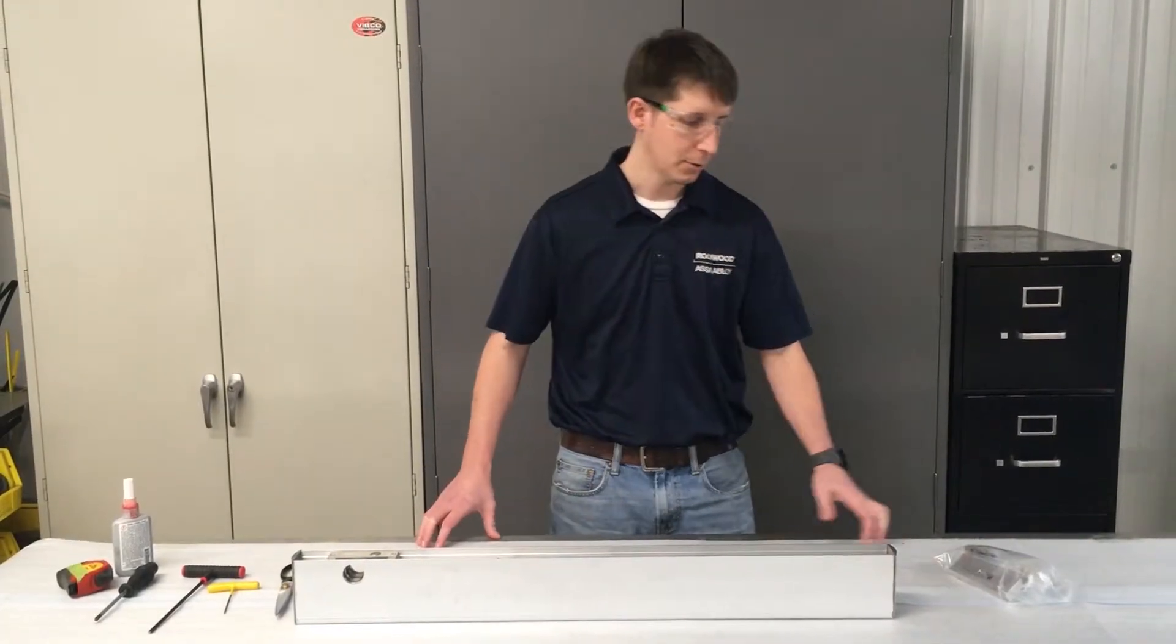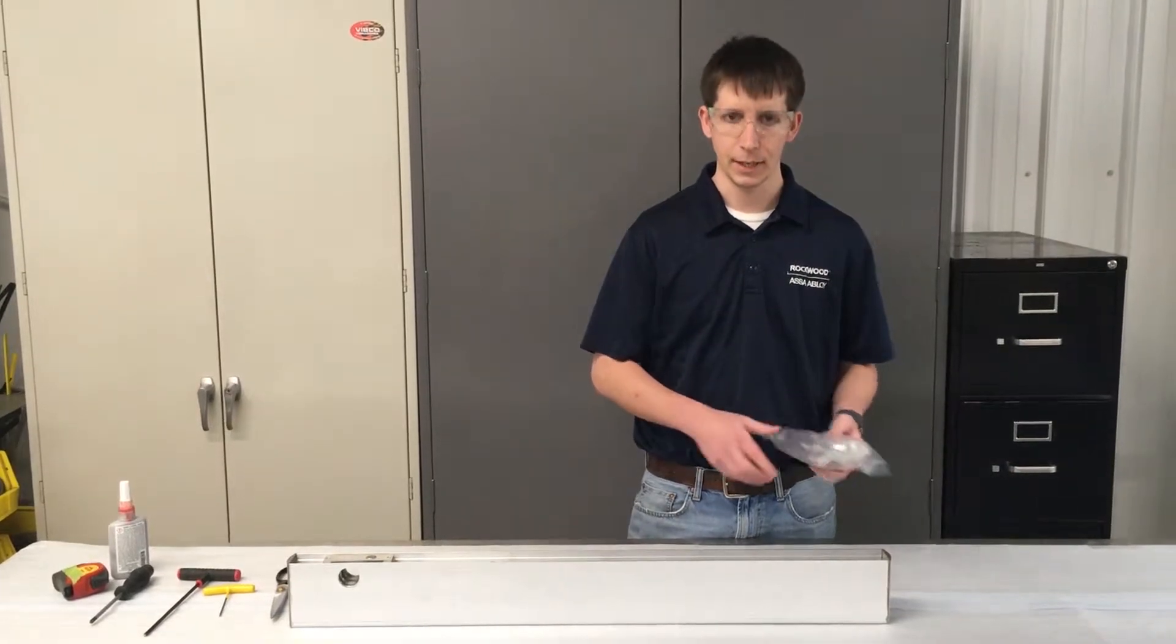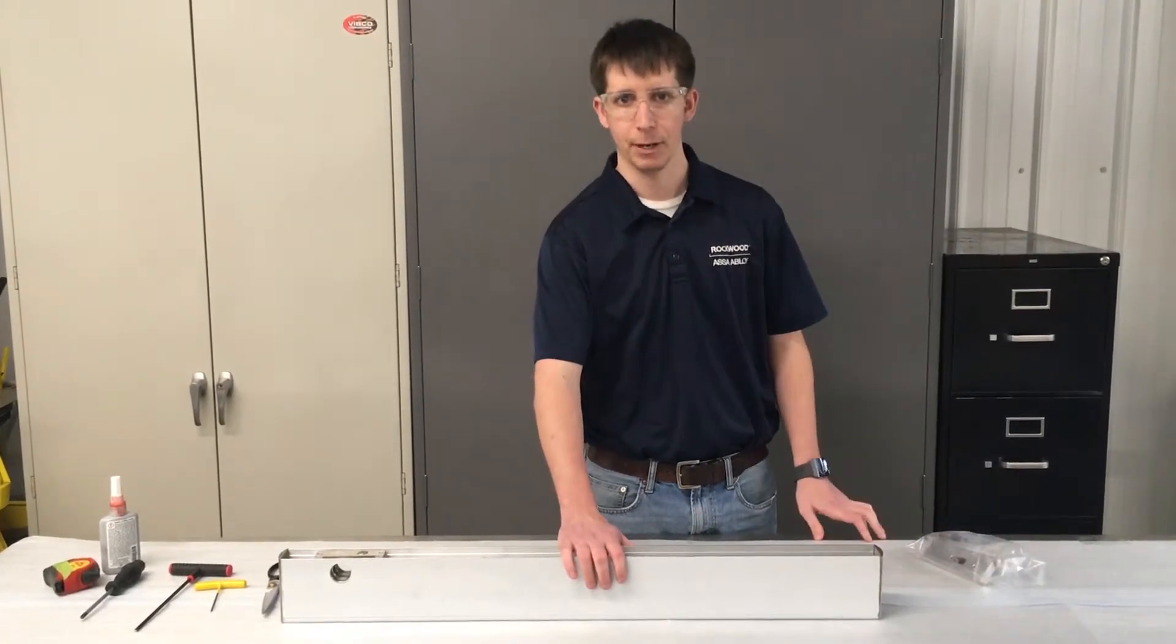Today we will be going over how to install the bottom end load kit in a 4-inch square door rail.